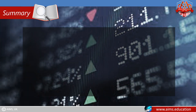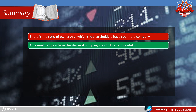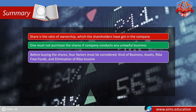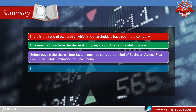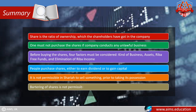Here is the summary of this chapter. Shares are the ratio of ownership which shareholders have in a company. One must not purchase shares if the company conducts any unlawful business. Before buying shares, four factors must be considered: the kind of business, assets, riba-free funds, and elimination of riba income. People purchase shares either to earn dividends or to gain capital. It is not permissible in Sharia to sell something prior to taking its possession, and bartering of shares is not permissible in Sharia.